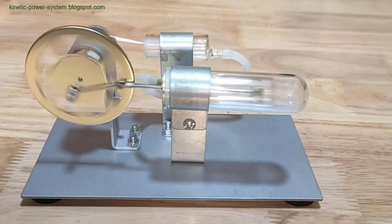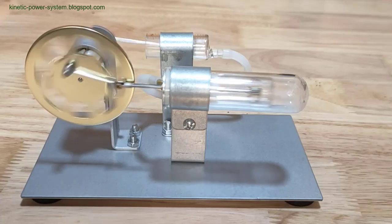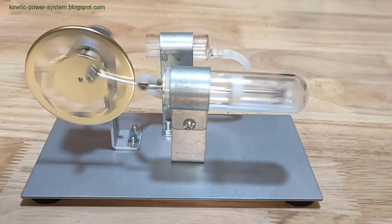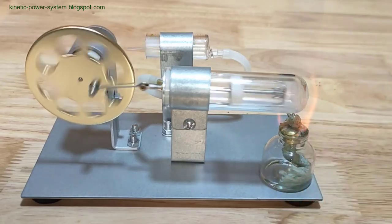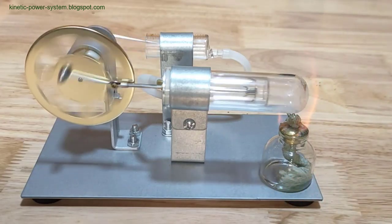Combined Heat and Power (CHP) plants for businesses utilize Stirling engines to generate both electricity and heat, improving overall energy efficiency. This dual functionality makes Stirling engines an attractive option for decentralized power generation.